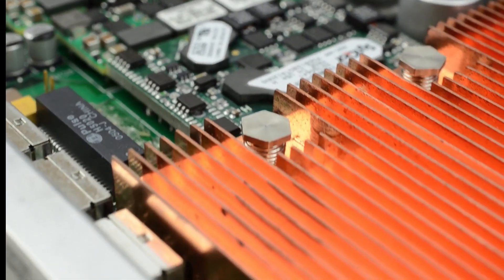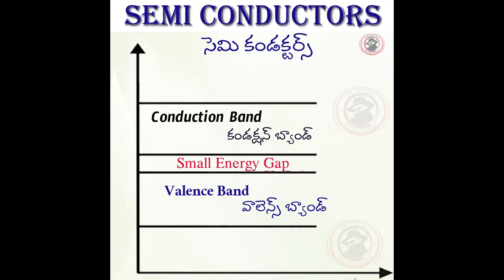Now let's look at the semiconductor band diagram. There is a valence band and a conduction band, and there is a small energy gap between them. Because the gap is small, a limited amount of electrons can flow through the semiconductor.